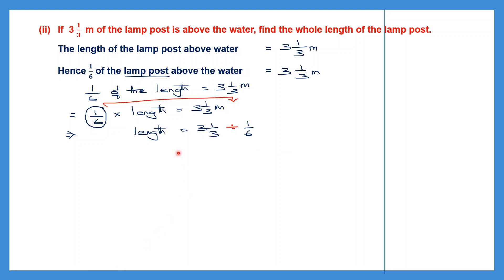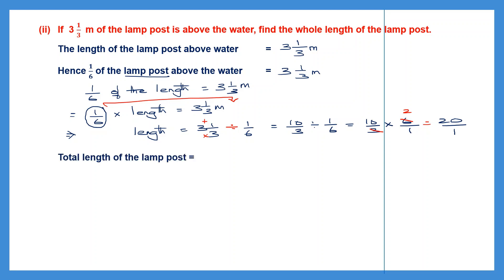Converting 3 and 1/3: 3 threes are 9 plus 1 gives 10, so it becomes 10/3. Now 10/3 divided by 1/6 — division becomes multiplication and 1/6 becomes 6/1. We can cancel 3 and 6: 3 twos are 6. So 10 twos are 20, giving 20/1. The total length of the lamp post is 20 meters.